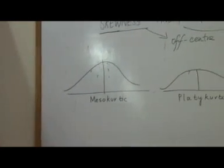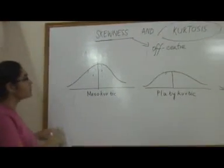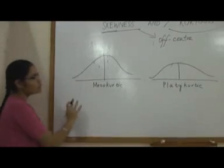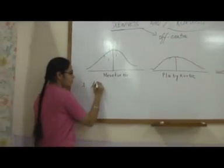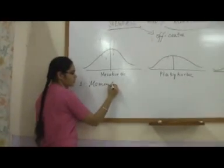We have a moment coefficient of kurtosis, just like a moment coefficient for skewness. We have two coefficients here. Let's do the moment coefficient of kurtosis first.